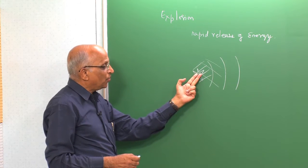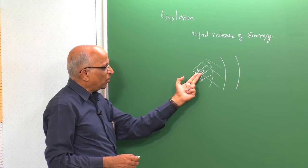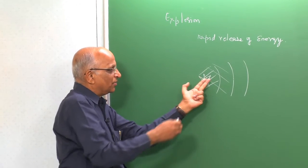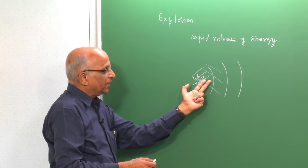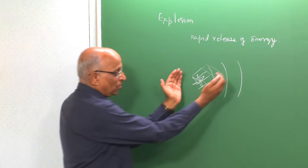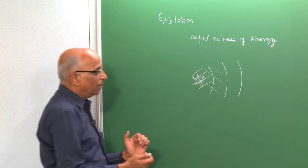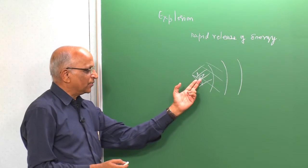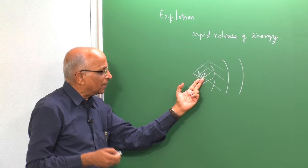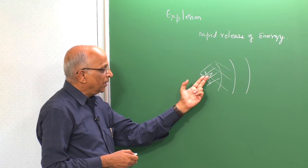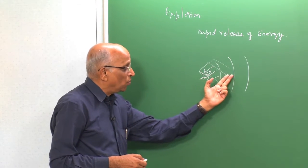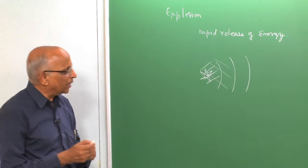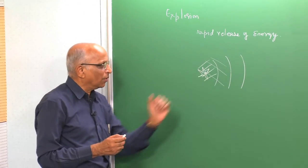When we say redistribution of energy, it is the potential energy of the explosive which gets converted into kinetic energy and potential energy, all contained within the lead blast wave. There is something important we have been telling repeatedly: the material does not move — it is the energy which gets redistributed. This point must be kept in mind as we go along.